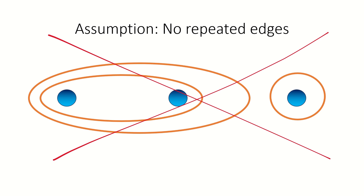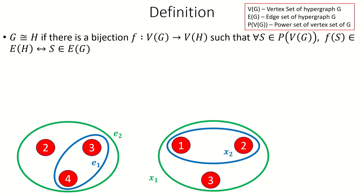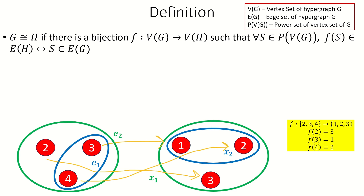So how can we tell whether two hypergraphs without repeated edges have the same structure? Since our hypergraphs have no repeated edges, we can identify each edge in a hypergraph with the collection of vertices it contains, allowing us to define the collection of edges as a set of sets. Let G and H be hypergraphs. We say that G is isomorphic to H if there's a bijection F from the set of vertices of G to the set of vertices of H, such that the image under F of any set S of vertices in G is an edge in H if and only if S is an edge in G.